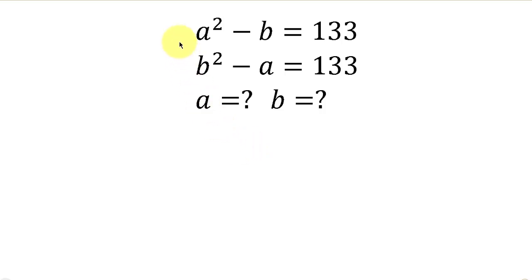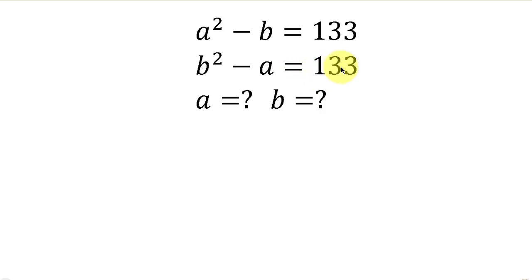You're welcome to solve this math question that says: find the values of a and b for which a squared minus b is equal to 133, and b squared minus a is equal to 133. There is a condition attached to this question that says a is not equal to b.